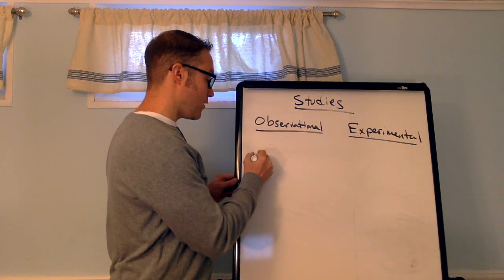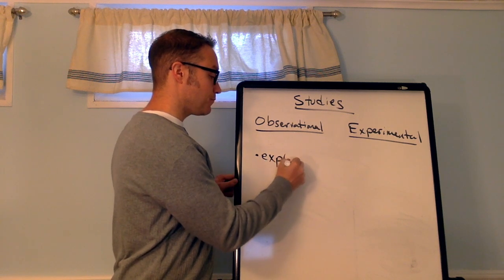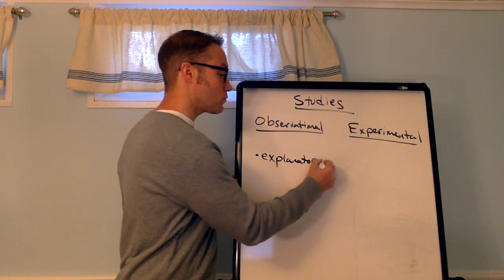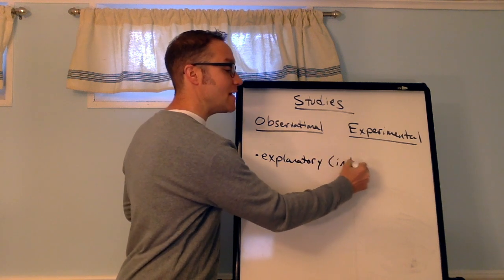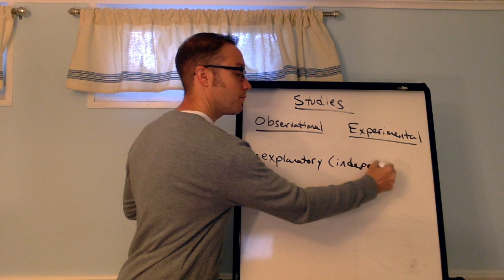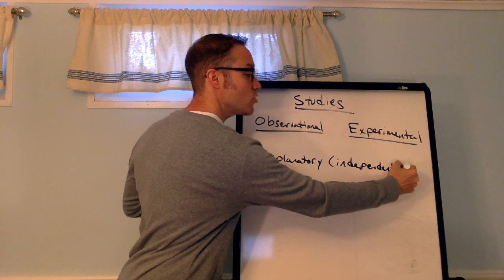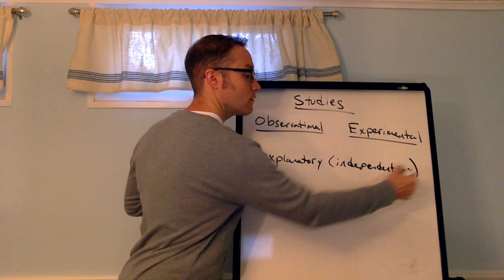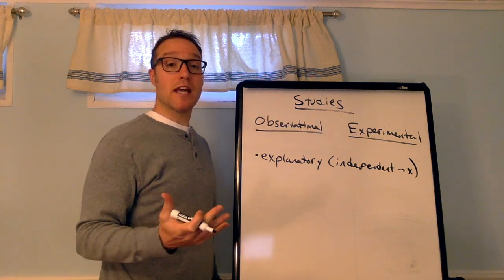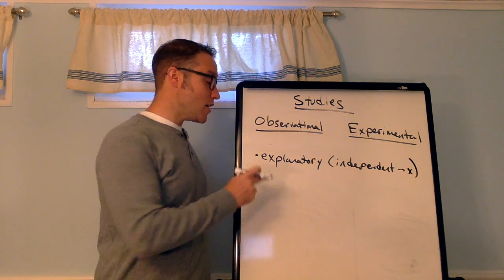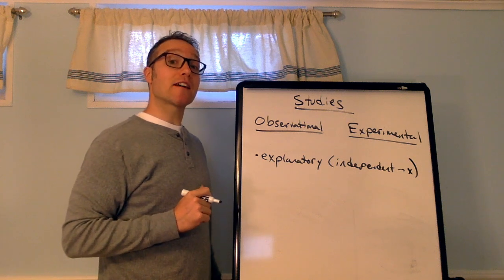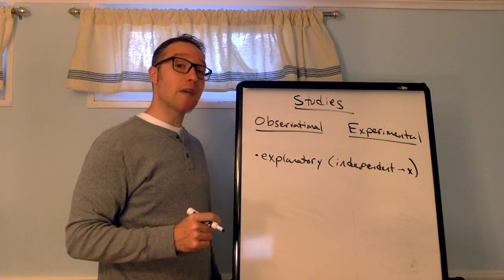We have an explanatory variable, which is also known as an independent variable, and it's usually the x variable. So if I were going to plot data, bivariate data, the explanatory variable would be on the x-axis.